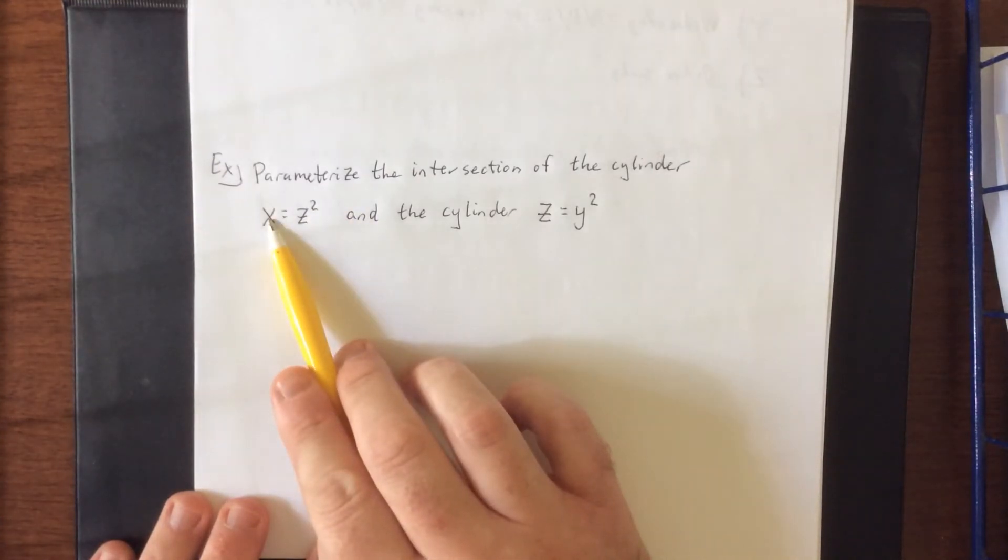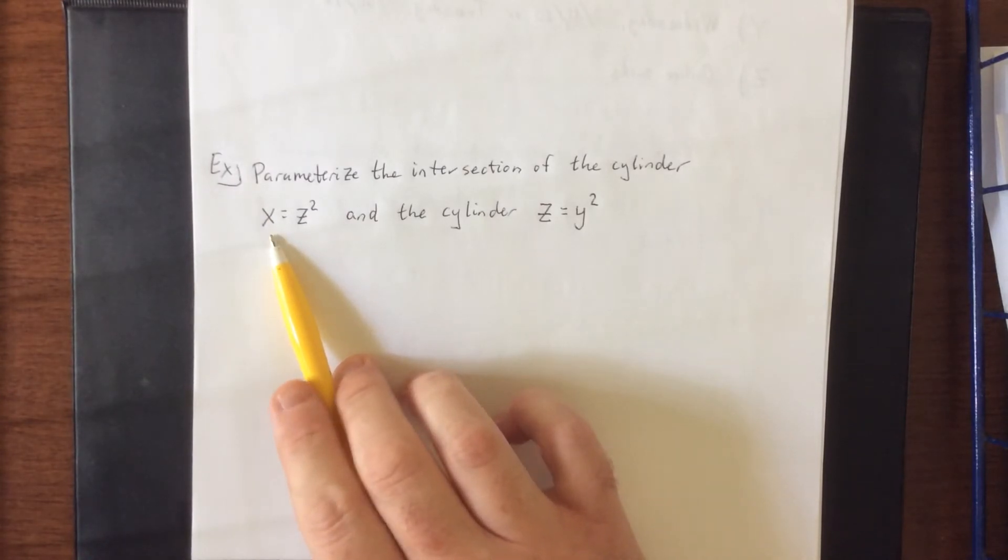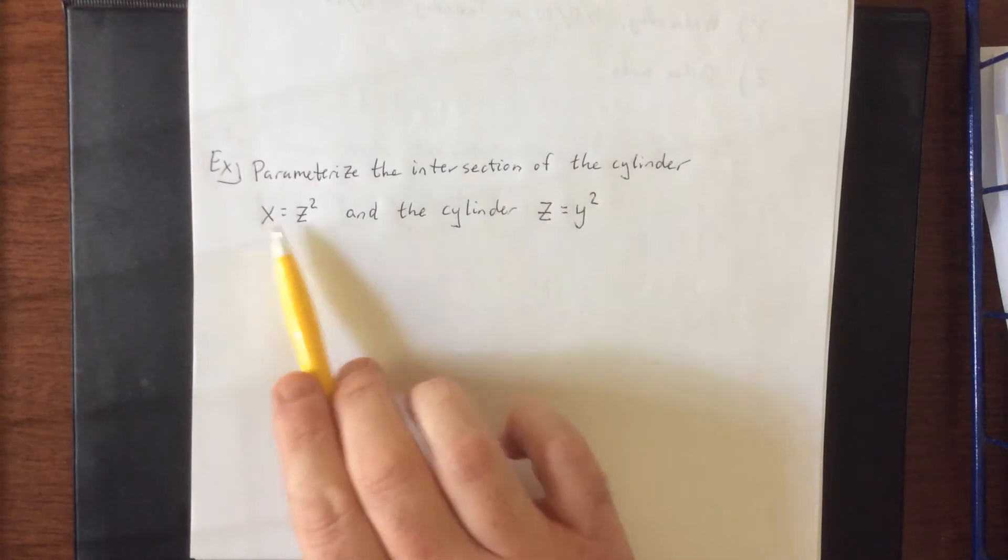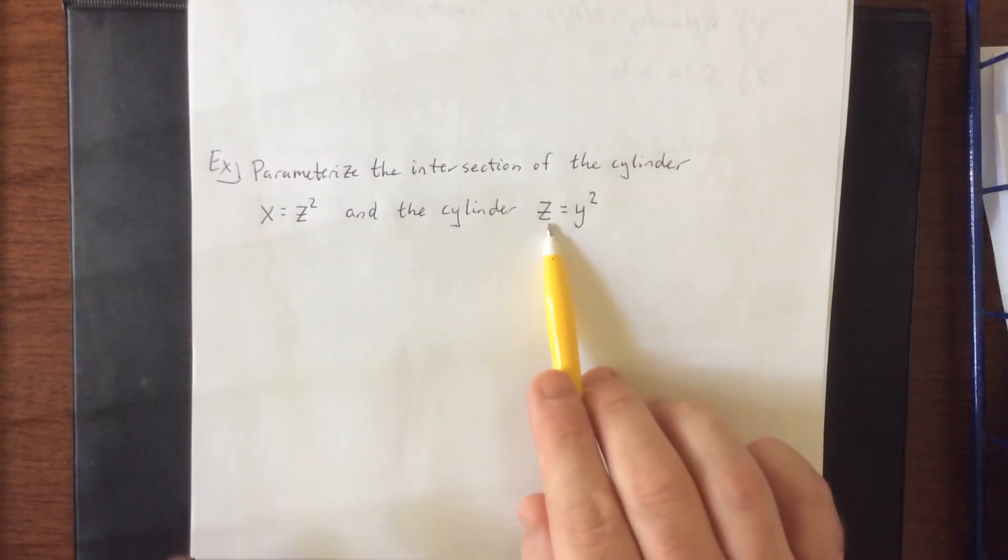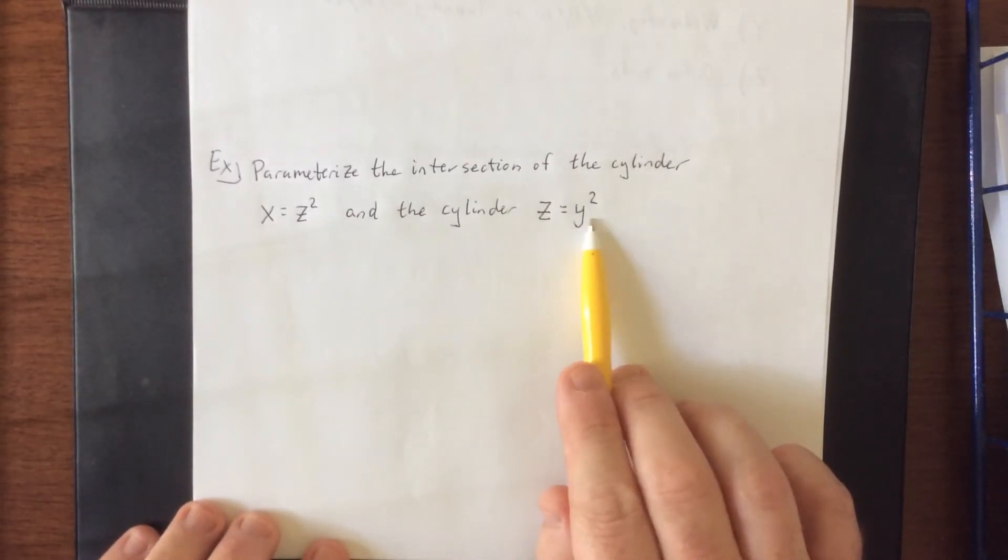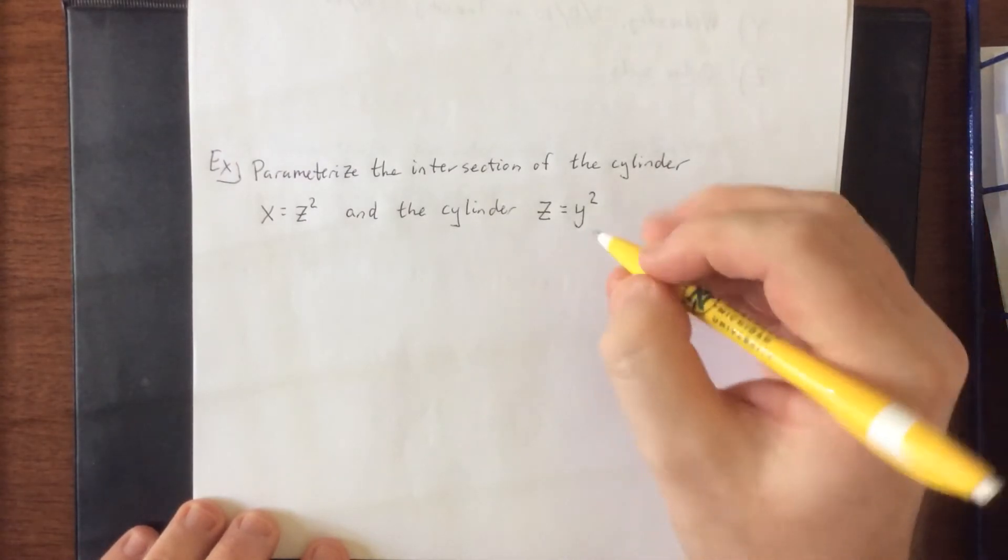I would need to take a square root of x and that is what I said to explicitly avoid. So rather than that, what we're going to do is observe that x is a function of z and that z is a function of y. So what I'm going to do is allow y to be my parameter.